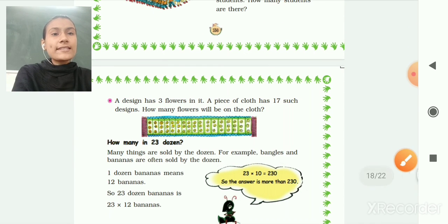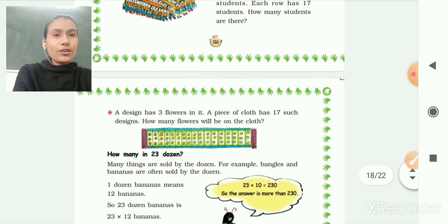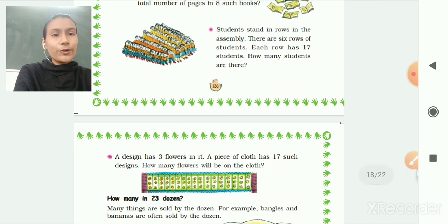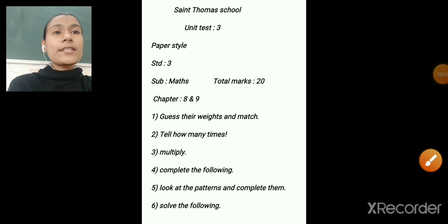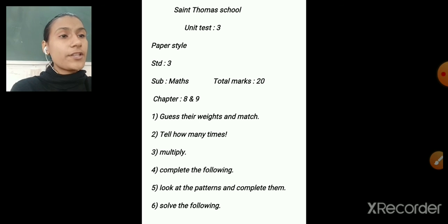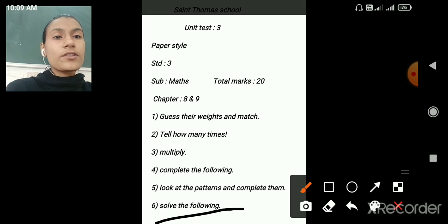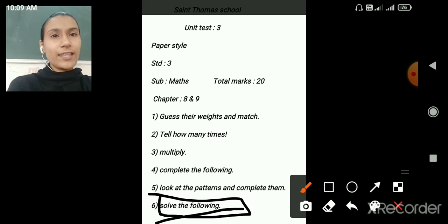Then next one. A design has 3 flowers in it. A piece of cloth has 17 such designs. So how many flowers will be on the clothes? This is your homework. You have to practice at your home. So this is your paper style for the unit test 3. Practice at your home. And today's homework is solve the following. So this Roman you have to write in your fair book as a revision. Thank you.